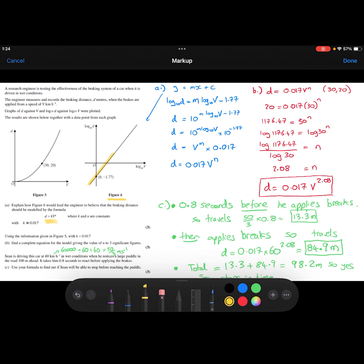This is a straight line, which makes me think y equals mx plus c. Except that we don't have y, we've got log base 10 of D. We don't have x, we've got log base 10 of V. And our y-intercept is minus 1.77. So this is my starting point from that graph.